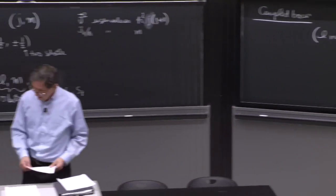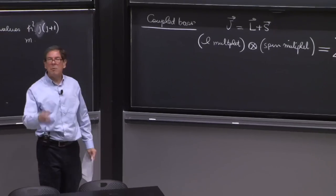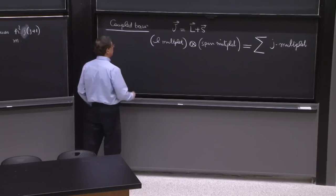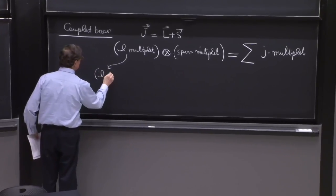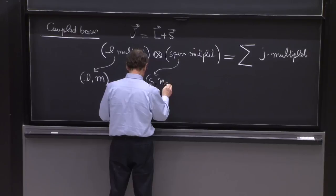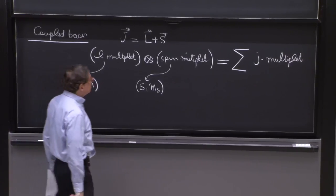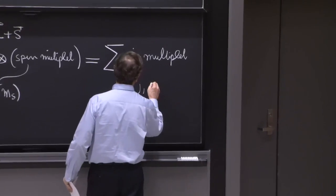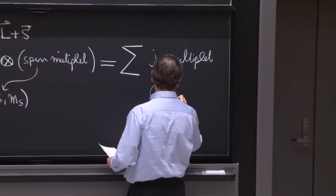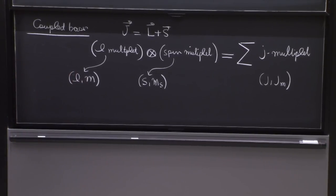So I'll want to say a couple more things about this. When we do addition of angular momentum, what happens to the quantum numbers? That's, again, also a thing that sometimes is a little subtle. And I want to emphasize it. So an l-multiplet is described by l and m. A spin multiplet is defined by s and ms. But when you have a j-multiplet, you have j and jm.